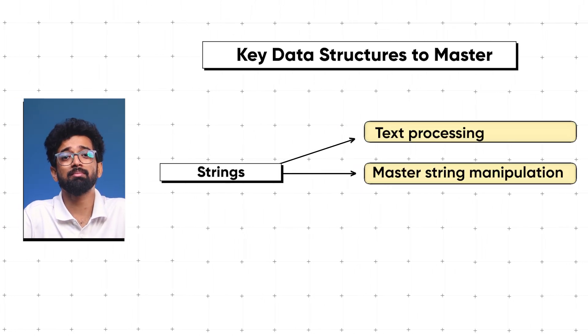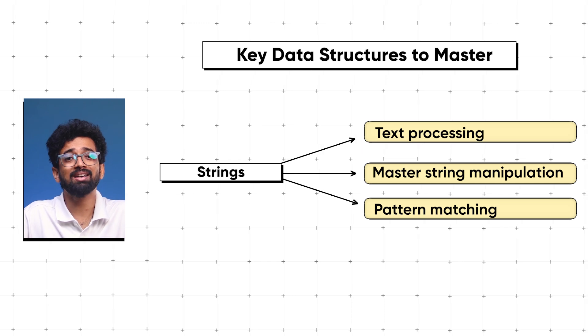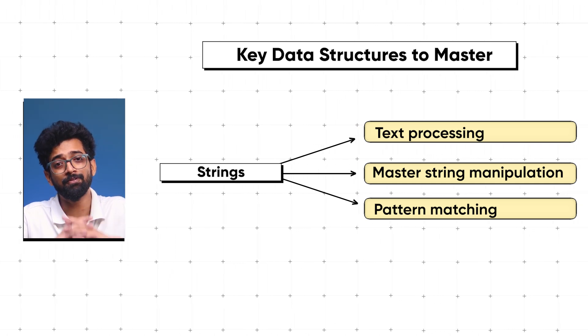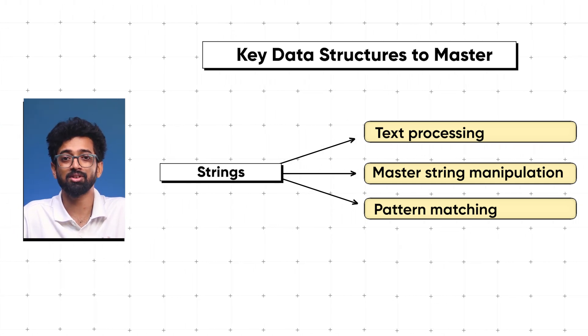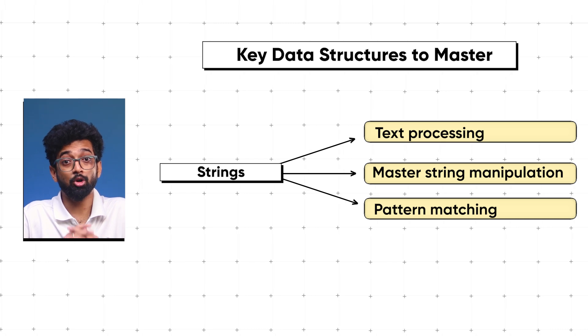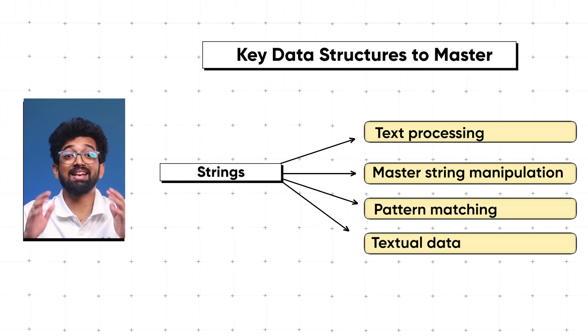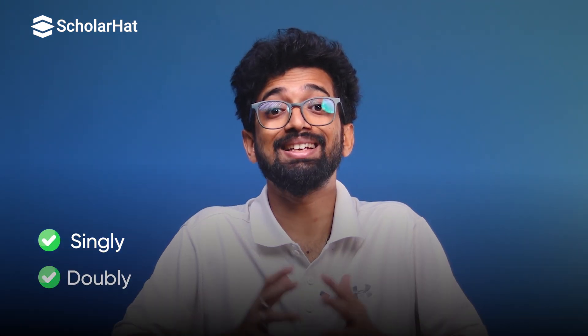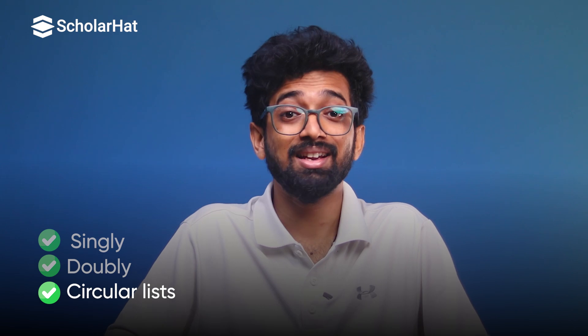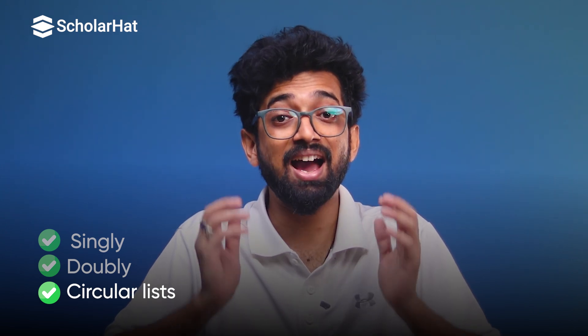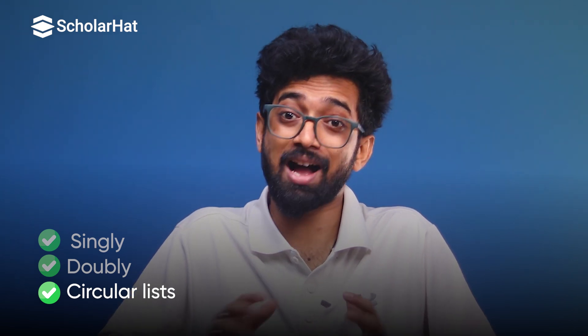The second type of data structure is strings. They are crucial for text processing — master string manipulations and pattern matching to handle various text-based problems efficiently. Linked lists offer a dynamic way to manage data, allowing efficient insertion and deletion of elements. Get to know singly, doubly, and circular linked lists — each has its own set of applications.